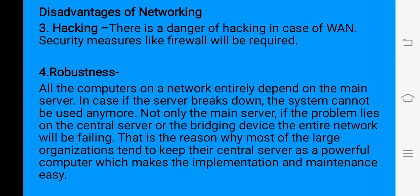Robustness: in networking, all the computers depend on a main server. If the main server breaks down, other systems also cannot do their work. You may have seen in banks that they say they cannot use the software because of a networking problem — because the data is on the central computer, and if there is a problem with networking or the central computer is not working, the other computers connected to that server cannot access the data.